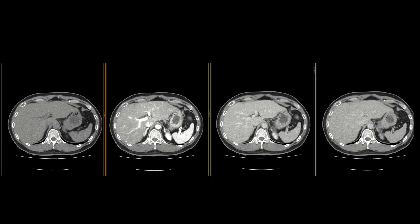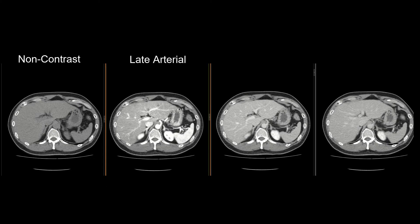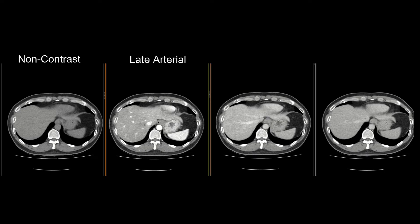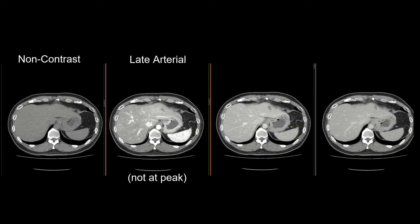Here are the four phases. One, on the left, a non-contrast acquisition before IV contrast was given. Two, we have a late arterial phase acquisition around 35 seconds after injection, with the arteries opacified and the portal vein opacified, but not yet the hepatic veins. Notice that the background liver doesn't enhance that much — remember, most of the supply is portal venous.